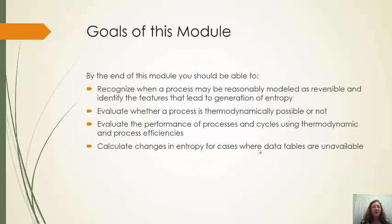But the primary goals: first we want to be able to recognize when a process may be reasonably modeled as reversible, and identify what it is about that process that is leading to generation of entropy. Then we want to evaluate whether a process is possible or not based on thermodynamics. We will evaluate the performance of processes and cycles using thermodynamic efficiencies and process efficiencies. And finally, we will be calculating changes in entropy for cases where the data tables are not available.